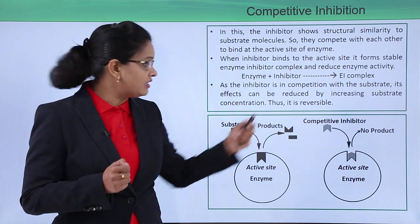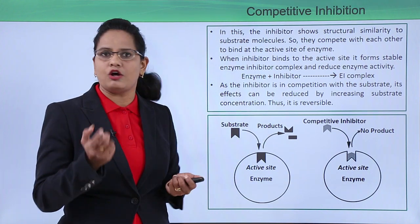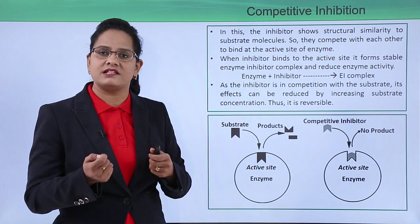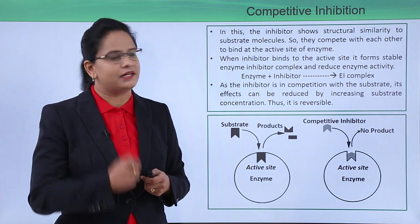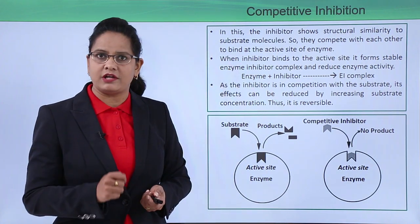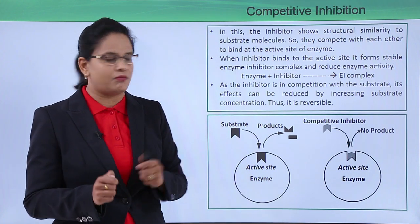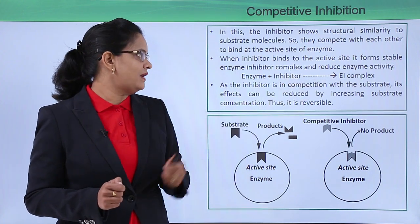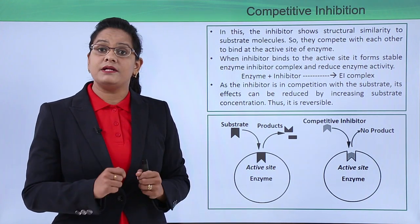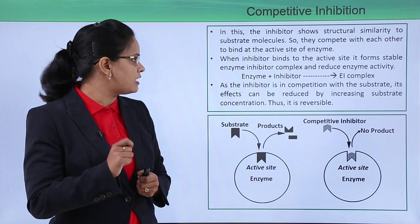When the competitive inhibitor binds to the active site, the substrate cannot bind. If the substrate cannot bind, the product will not be formed, and as a result the rate of reaction will decrease. When the inhibitor binds to the active site, an enzyme-inhibitor complex is formed, which is known as the EI complex.